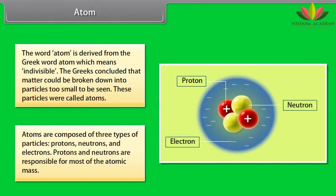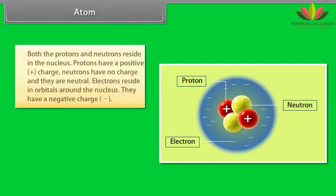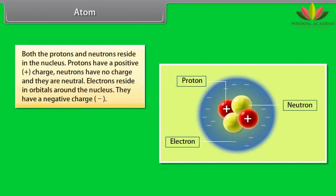Protons and neutrons are responsible for most of the atomic mass. Both the protons and neutrons reside in the nucleus. Protons have a positive charge. Neutrons have no charge and they are neutral. Electrons reside in orbitals around the nucleus. They have a negative charge.